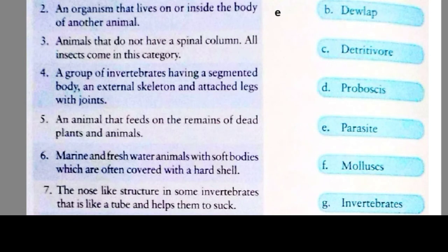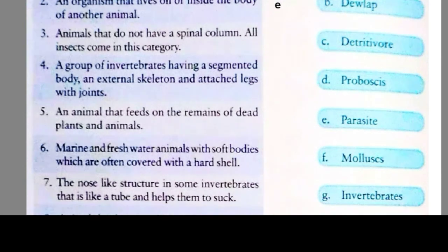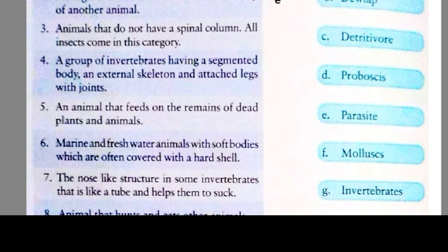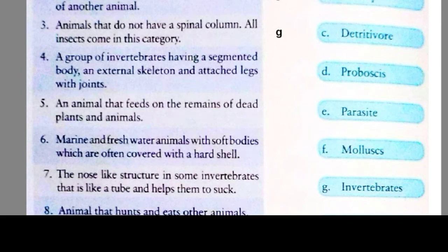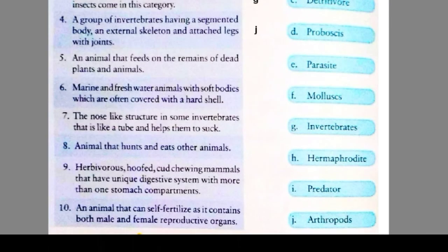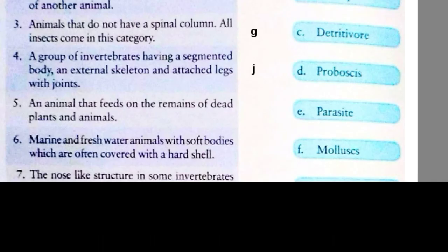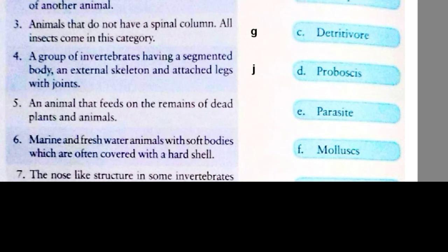Question 3: a group of invertebrates having a segmented body, an external skeleton and jointed legs — this term is known as arthropods, option J, written in front of 4. Question 5: an animal that feeds on the remains of dead plants and animals — this term is called detritivore, option C, written in front of 5.